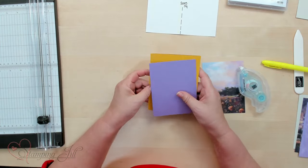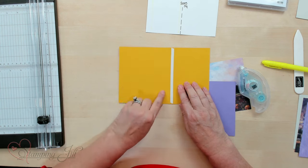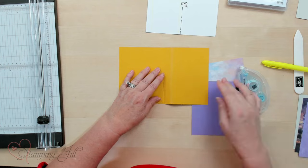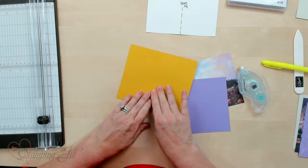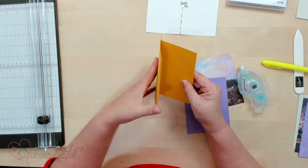This is the basic of the template which is the first piece. It's scored at 4 1/4 and 5 1/4. I put the sticky strip here so let's go ahead and take that off and fold it over and that becomes your slim card on the inside. So that's the main part of the card.